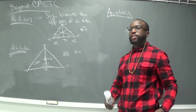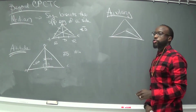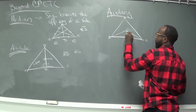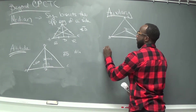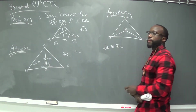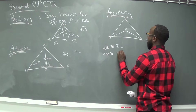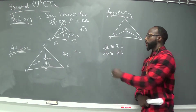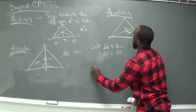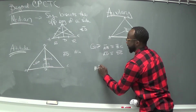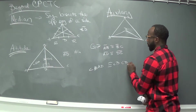An auxiliary line is the line that we write ourselves — it's an invisible line. For instance, if we had this triangle — A, B, C and D — and the given information said segment AB is congruent to segment BC, and segment AD is congruent to segment DC. What would we need to do to prove that angle BAD was congruent to angle BCD?